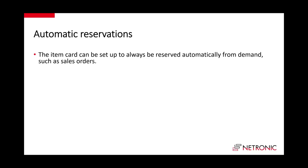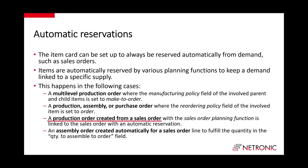If you have a sales order and it tells you there is insufficient inventory, and you decide to create a production order from that sales order immediately, then an automatic link will be created. When I read the documentation on automatic reservations, it read quite straightforward. When I then looked at the section on manual reservations, I came across a table that does not exist for automatic reservations.